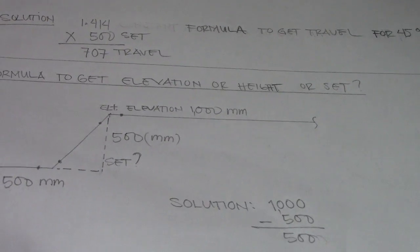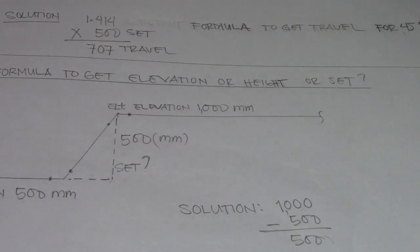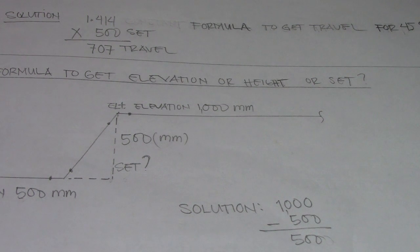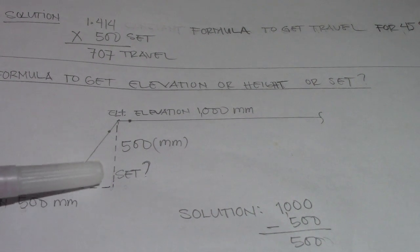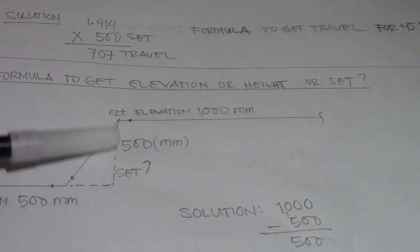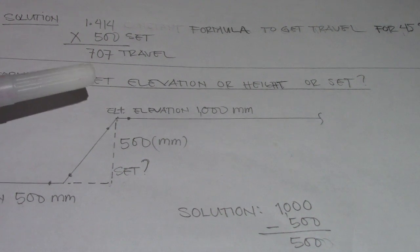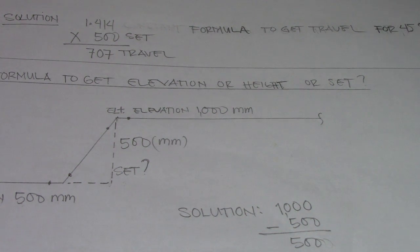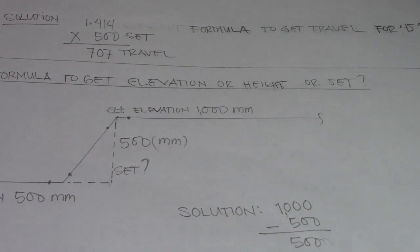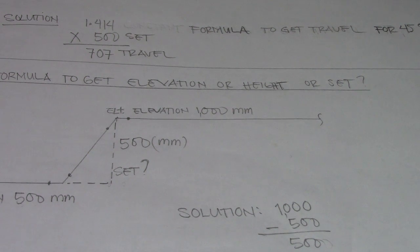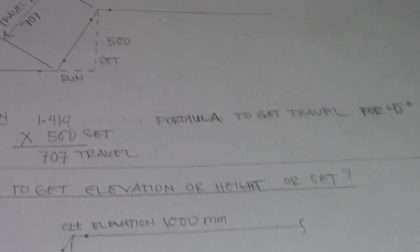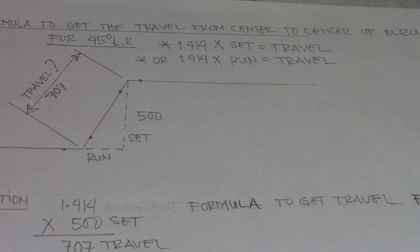So this is our elevation of 500. This is an easy way to find the elevation. In the original drawing, you can use these formulas. These formulas are very useful to find the travel and also the height.